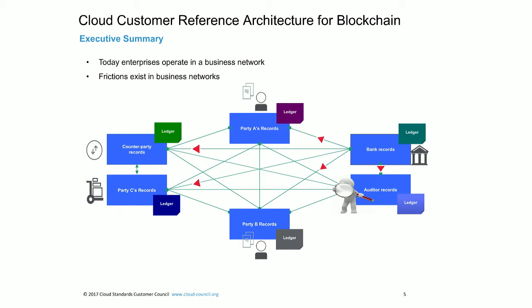Businesses rarely operate in isolation. They generally benefit by connecting with other parties such as their customers and suppliers, and in many cases they connect across geographic boundaries — like most of the banking system. As businesses operate, wealth is generated as goods and services, and these move across the business network. Today, the growth of wealth is constrained by friction in the business network — inefficiencies that impact the smooth flow of business operations.